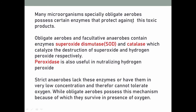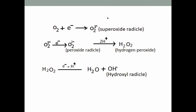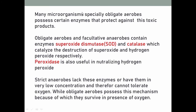Many microorganisms, especially obligate aerobes, possess certain enzymes that protect against these toxic products. The aerobic mechanism utilizes oxygen and produces superoxide radicals, so aerobic and facultative organisms possess enzymes to fight against these toxic products. Obligate aerobes and facultative aerobes contain the enzymes superoxide dismutase, catalase, and peroxidase.